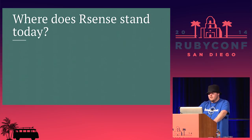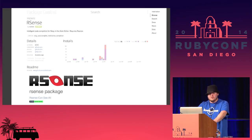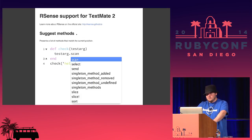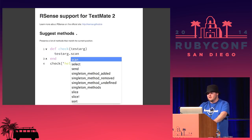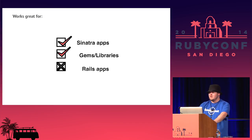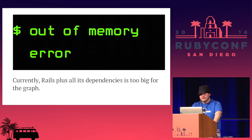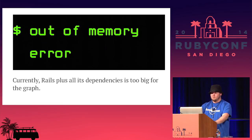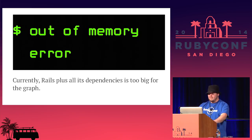Where does R-Sense stand today? There are currently three editor plug-ins known to be working: one for the Atom editor that I wrote, another for Sublime Text that I also wrote, and a third for TextMate 2. I've very recently switched to Emacs, so now I have motivation to make an Emacs plug-in, and I'm really looking for somebody who wants to take on making a Vim plug-in. It works great for Sinatra apps and when working on a gem or a library, but it currently falls down on Rails apps — it runs out of memory. Rails plus all its dependencies is just too big for the graph. But I have a solution: caching the graph, which would work around that limitation — it just needs to be implemented.